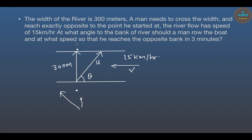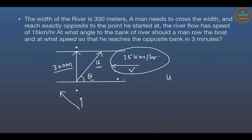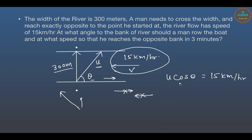The man reaches exactly opposite, which means the horizontal component of his velocity cancels the river's 15 km/h flow. The horizontal component of the man's velocity is U cos theta, and this must equal 15 km/h. So the first equation is U cos theta equals 15 kilometers per hour. We have two unknowns, U and theta, so we need two equations.